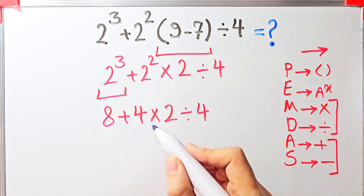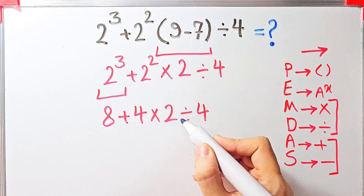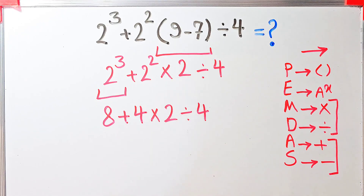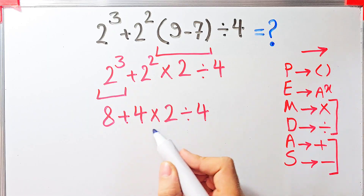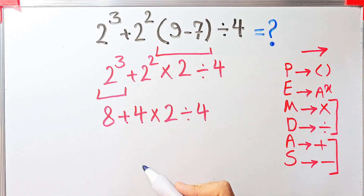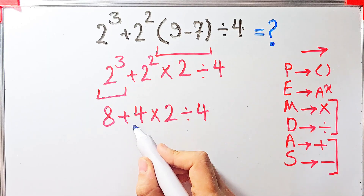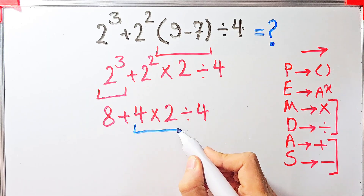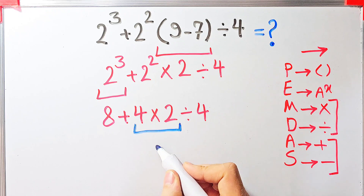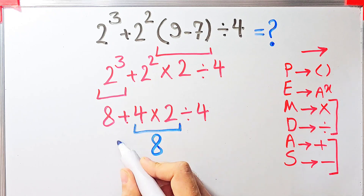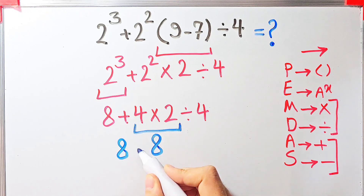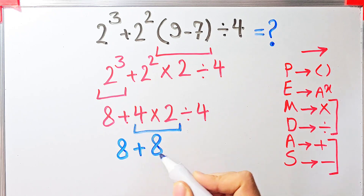According to the PEMDAS rule, we simplify multiplication before addition. 4 times 2 equals 8. Now we have: 8 plus 8, divided by 4.